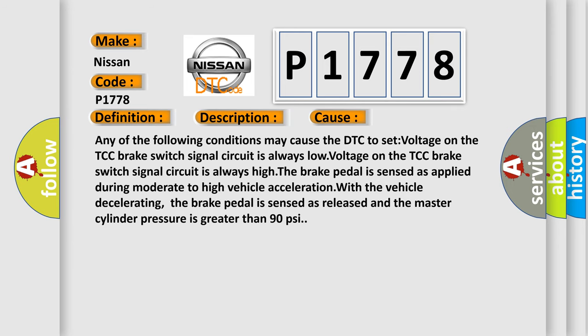Any of the following conditions may cause the DTC to set: voltage on the TCC brake switch signal circuit is always low, voltage on the TCC brake switch signal circuit is always high, the brake pedal is sensed as applied during moderate to high vehicle acceleration, with the vehicle decelerating the brake pedal is sensed as released and the master cylinder pressure is greater than 90 PSI.